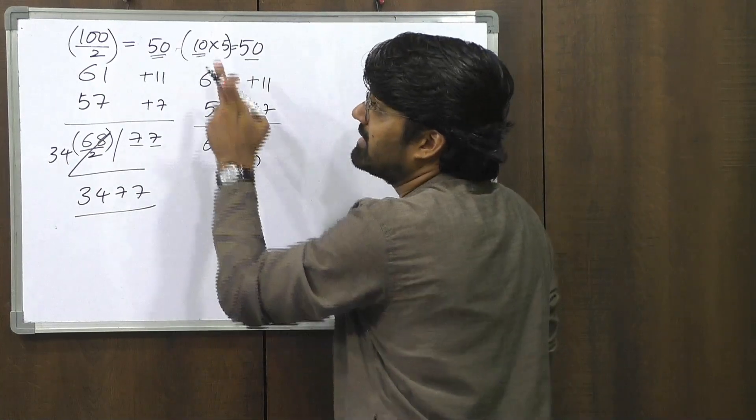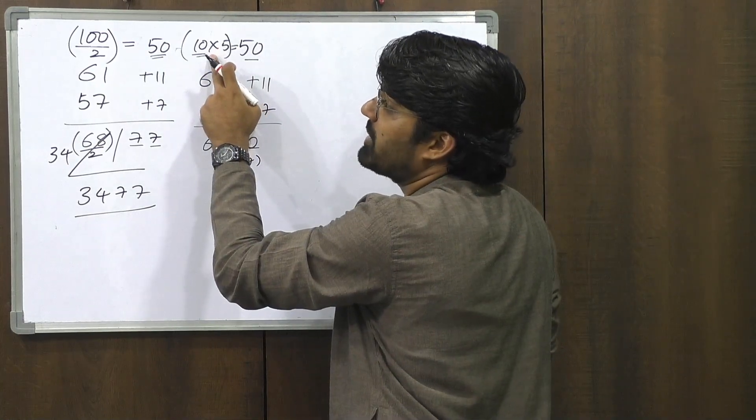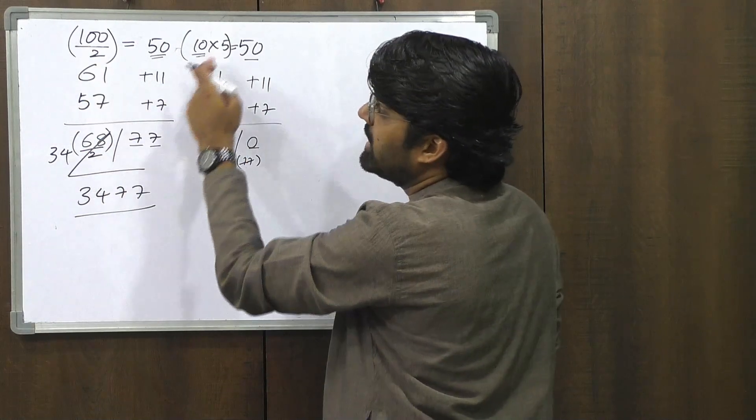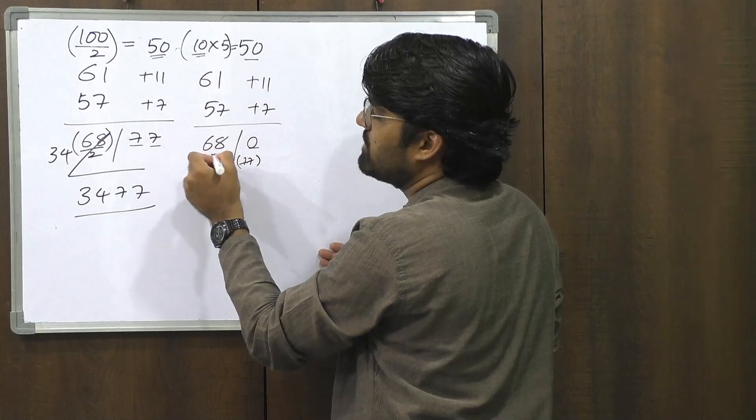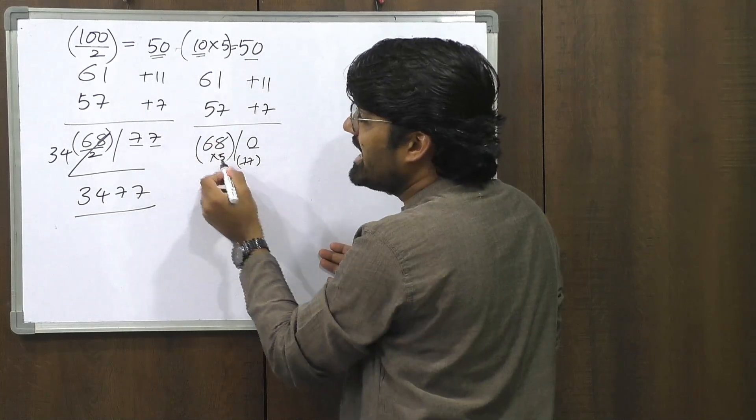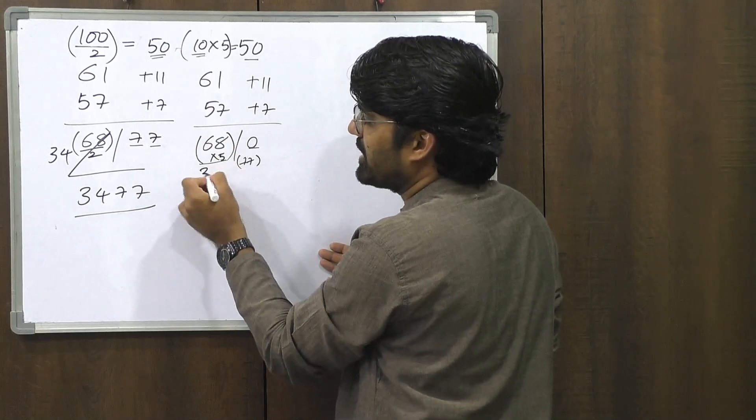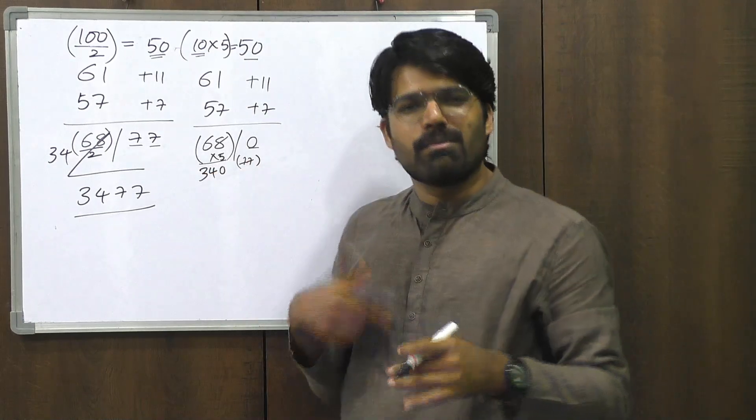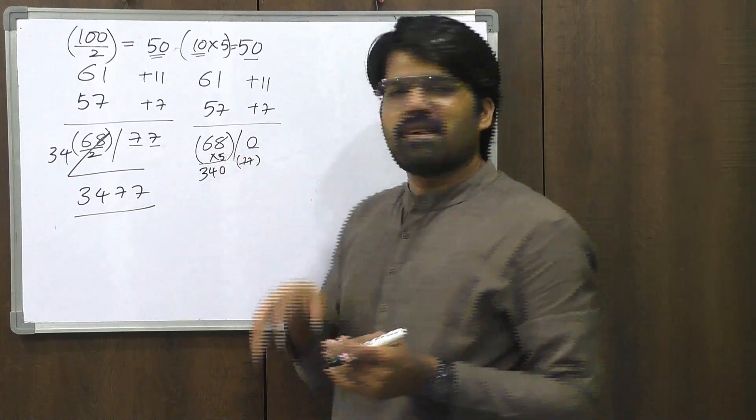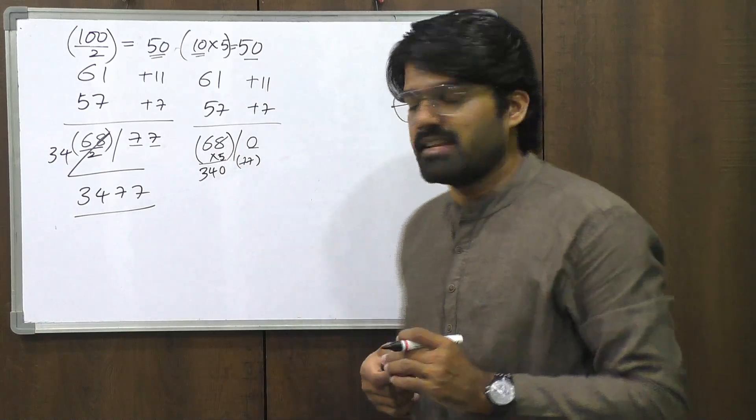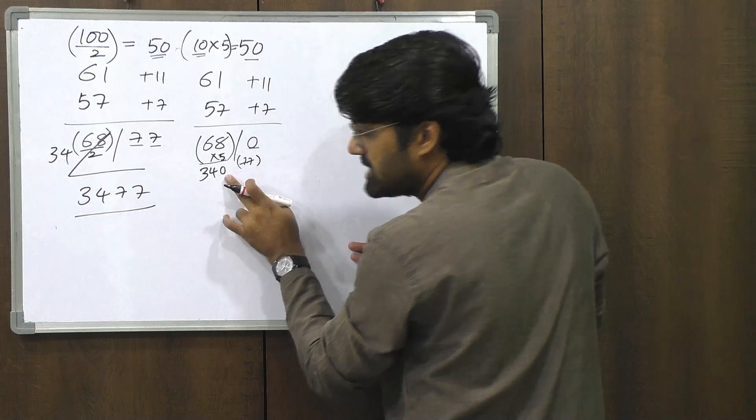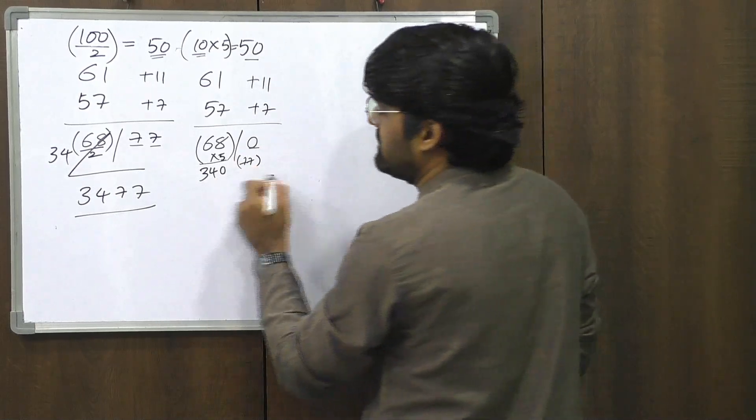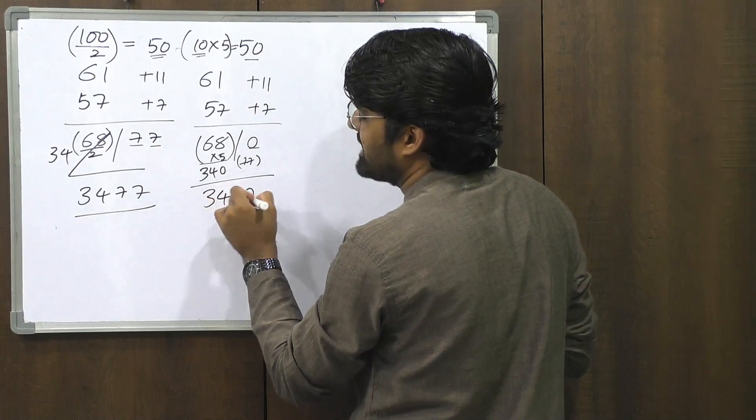But before you do that, remember, whatever operation was done here, the same thing has to be applied here as well. Divided by 2, divided by 2. Into 5. So this also should be into 5. And 68 into 5 is 340. We have learned this in all of our earlier videos. How to multiply a number by 5. Divided by 2 and multiplied by 10. So 68 times 5 is 340 in a jiffy. Doesn't take time. So we have a 340 and 0. So 3400 basically. Plus 77 gives you the same answer. 3477. Isn't that amazing?